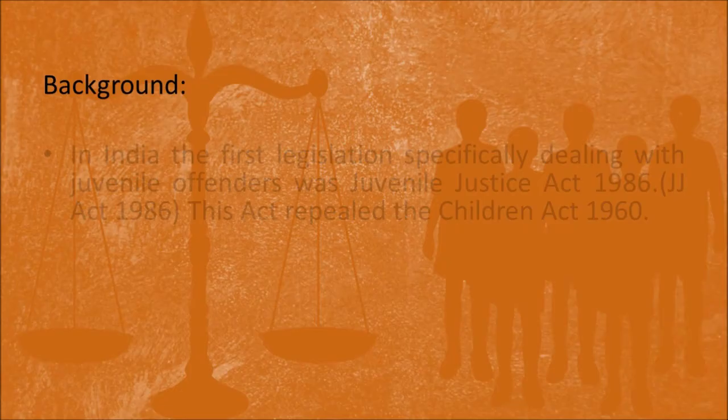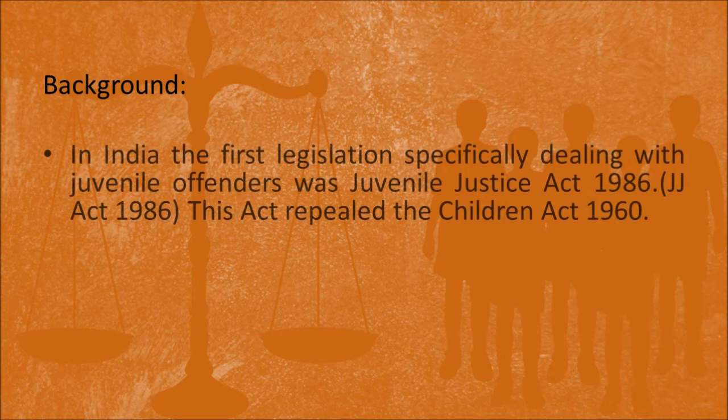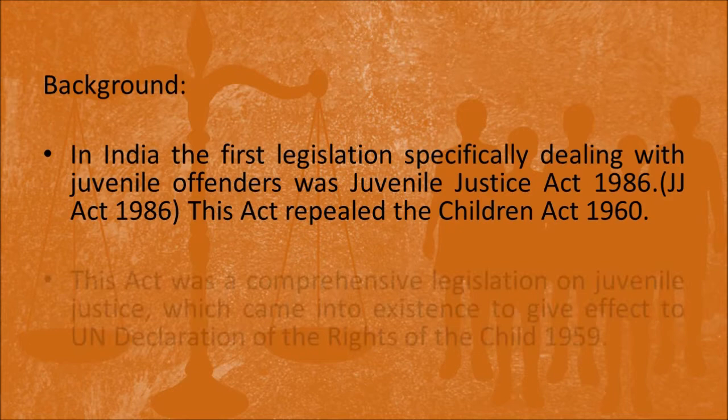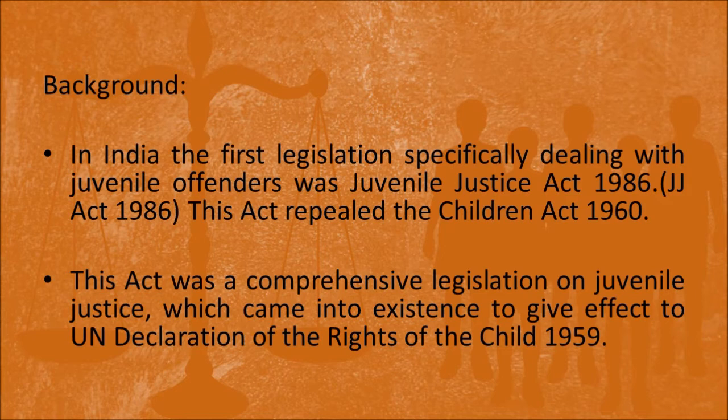The first legislation which specifically dealt with juvenile offenders and juvenile justice in India was the Juvenile Justice Act of 1986. This act was enacted after repealing the Children Act of 1960, which was a general legislation relating to children. The Juvenile Justice Act of 1986 was a comprehensive legislation on juvenile justice. It came into existence to give effect to the provisions of the United Nations Declaration of the Rights of the Child in 1959.